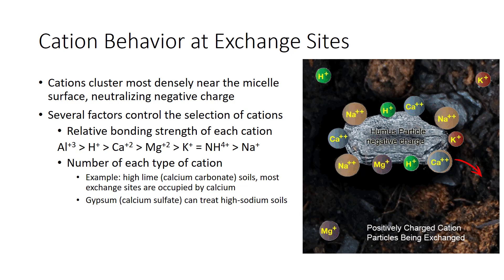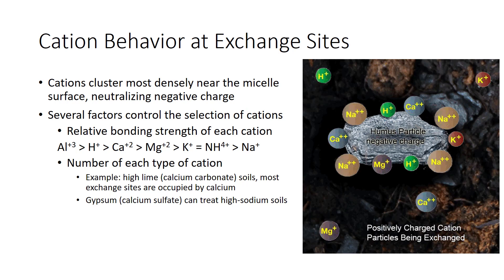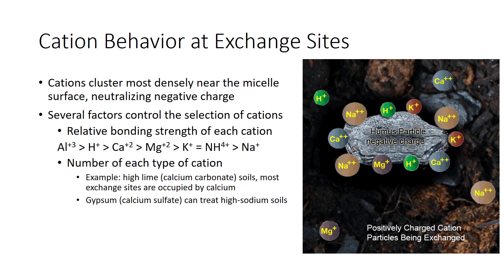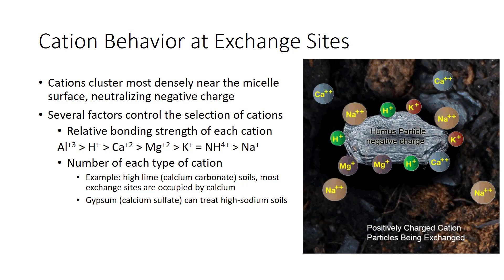As an example, in high lime (calcium carbonate) soils, most exchange sites are occupied by calcium. Consider treatment of high sodium soils with gypsum. In a high sodium soil, many exchange sites are taken up by sodium. When gypsum is added, calcium displaces sodium on the exchange sites. Displaced sodium enters the soil solution and is leached away by heavy watering. Calcium replaces sodium on the exchange sites by means of mass action — there are more calcium ions in solution, and because calcium is adsorbed more strongly than sodium.